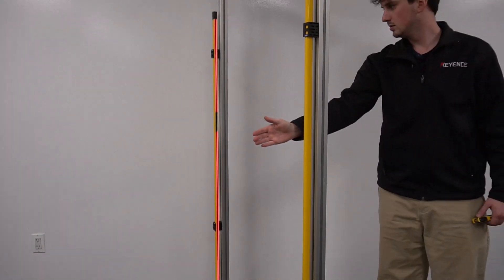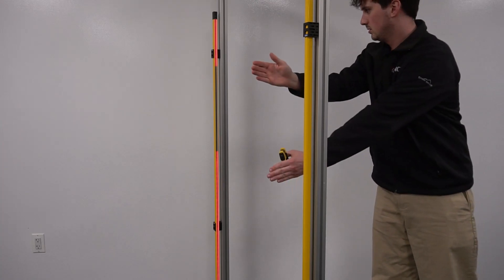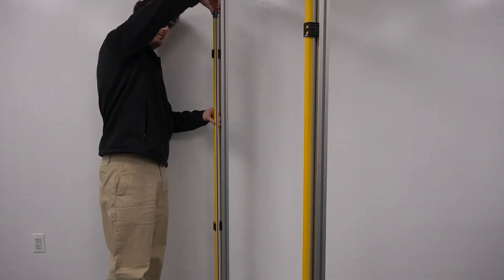This is super useful during setup since you can see exactly which parts of the curtains are being blocked. Whenever you get the curtains aligned, it will start to display a green color, which means that nothing is blocking the curtain, and it's receiving light on all of its beams.